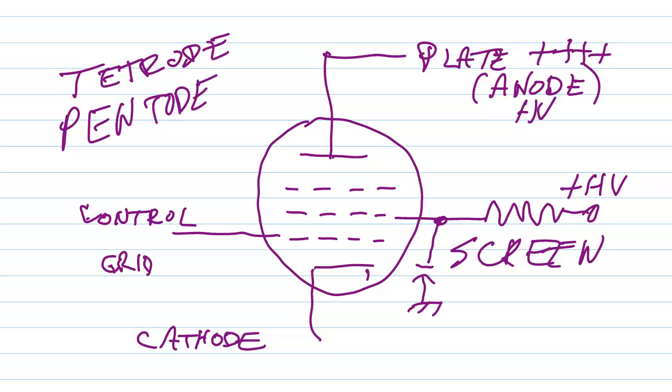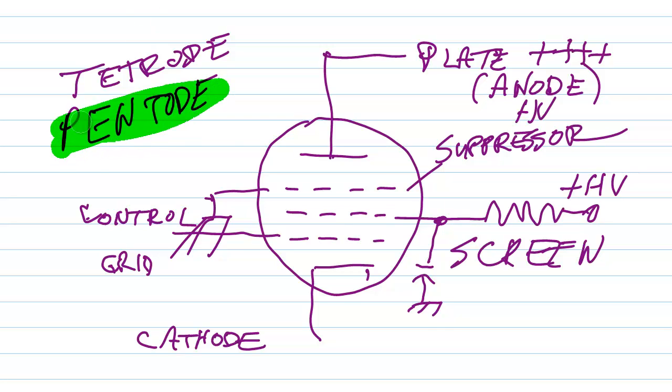And the emission of those secondary electrons can be blocked to some extent by using a third grid called the suppressor grid. Now you have three grids and a plate and a cathode for a total of five elements giving you a so-called pentode tube.